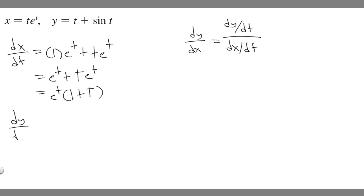Let's find dy/dt now. This one's actually going to be easy. It's just t plus sine of t. Derivative of t is 1, derivative of sine is cosine. So 1 plus cosine of t.